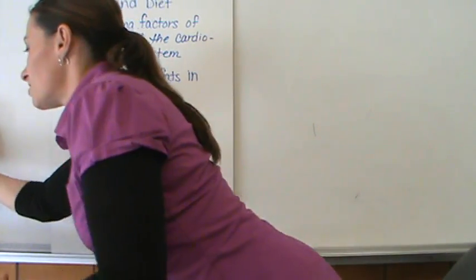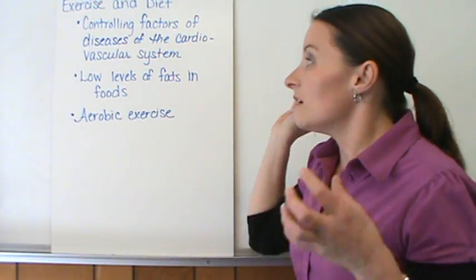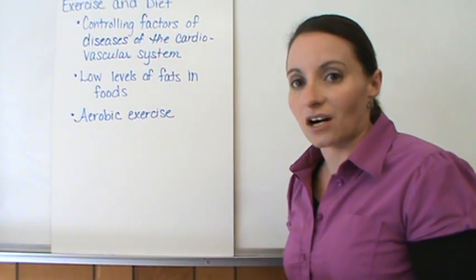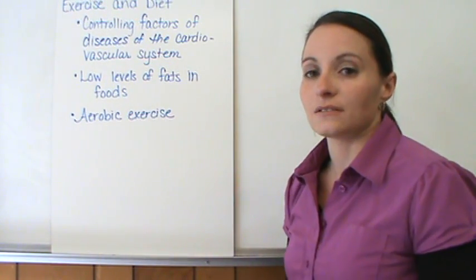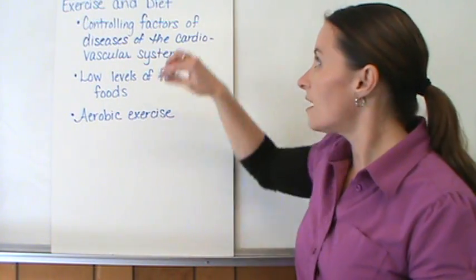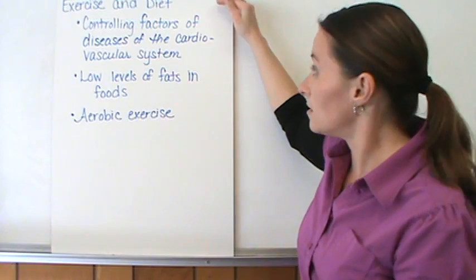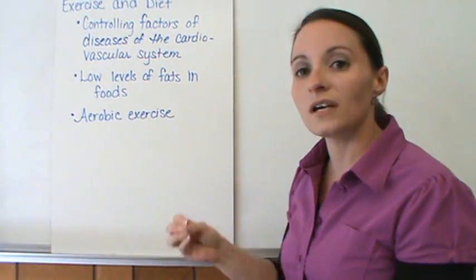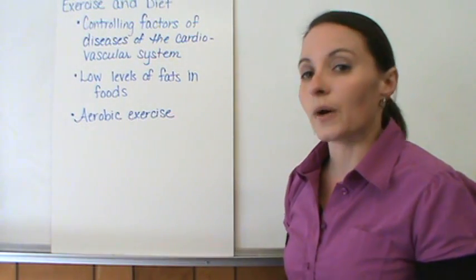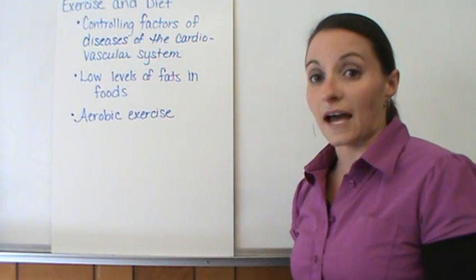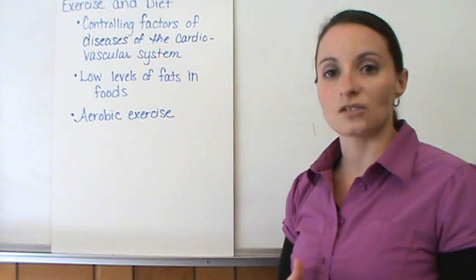What can we do to help control these diseases? Some factors we cannot control, like age and family history. However, we can control exercise, diet, and smoking. With diet, low levels of fat are important — high fat foods deposit fat into your cardiovascular system and bloodstream, where your body can't remove it and it builds up as plaque. Eating lower fat diets helps your body work better.